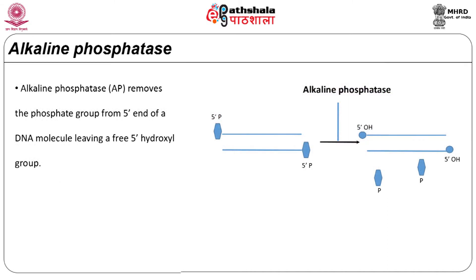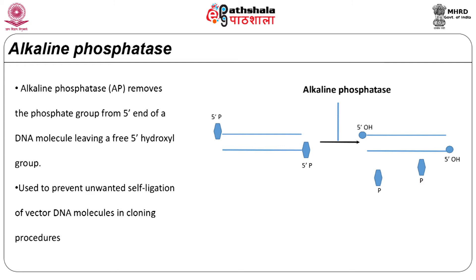The enzyme alkaline phosphatase removes the phosphate group from the 5 prime end of a DNA molecule, leaving a free 5 prime hydroxyl group at that position on the nucleotide. It is used to prevent unwanted self-ligation of vector DNA molecules in cloning procedures. These enzymes are most active at alkaline pH, hence the name. Alkaline phosphatase is isolated from bacteria or calf intestine. The bacterial alkaline phosphatase is more active but is often difficult to inactivate at the end of the dephosphorylation reaction, while the calf alkaline phosphatase can be inactivated by adding a protease or by heating the reaction mixture.